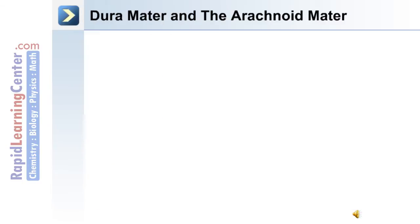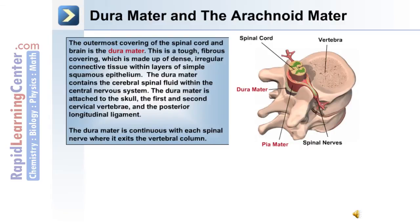The outermost layer is the dura mater, which overlies the arachnoid mater. The dura mater is a tough fibrous covering made up of dense irregular connective tissue within layers of simple squamous epithelia. It contains the cerebrospinal fluid within the central nervous system and is attached to the skull, the first and second cervical vertebrae, and the posterior longitudinal ligament. The dura mater is continuous with each spinal nerve where it exits the vertebral column.